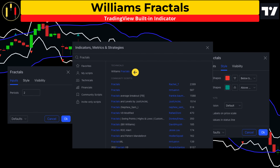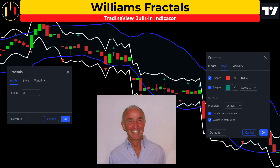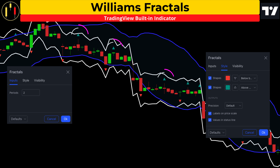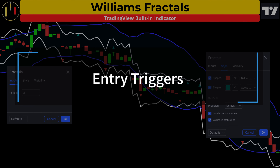The second free TradingView indicator is Williams Fractals. Inputs and style will be kept at default. The fractal indicator created by Bill Williams is based on a simple price pattern frequently seen in the financial markets. A bullish fractal occurs when there is a low point with two higher candles on either side. An up arrow marks the location of a bearish fractal while a down arrow marks the location of a bullish fractal. Since a Williams fractal signal is printed after a five-candle pattern, the second candle after the close will confirm the signal. In the Bollinger Frack, this study will provide our entry triggers.